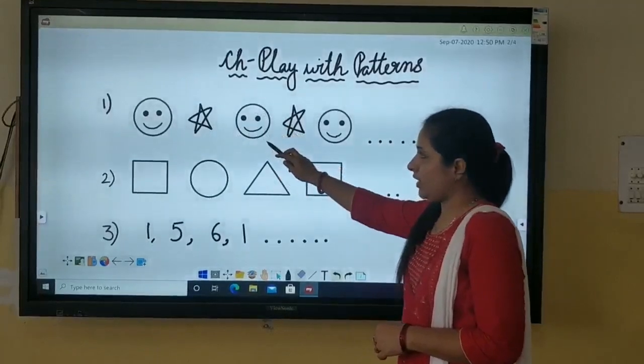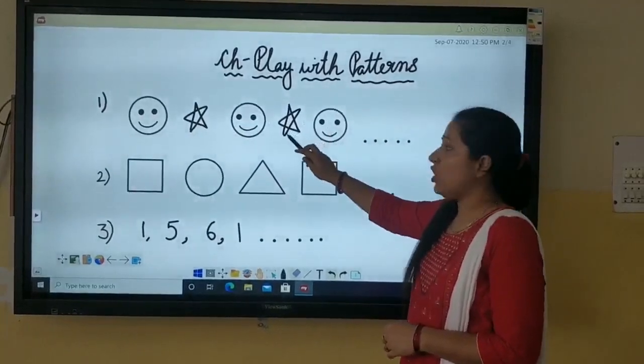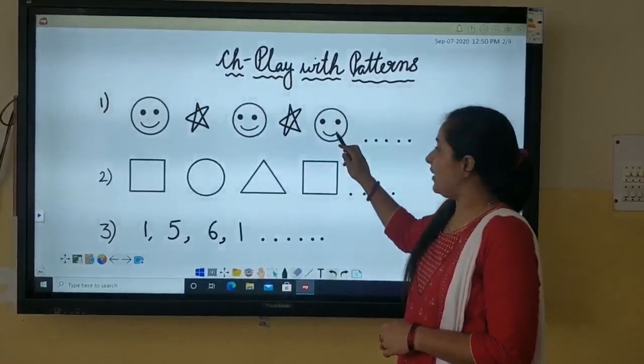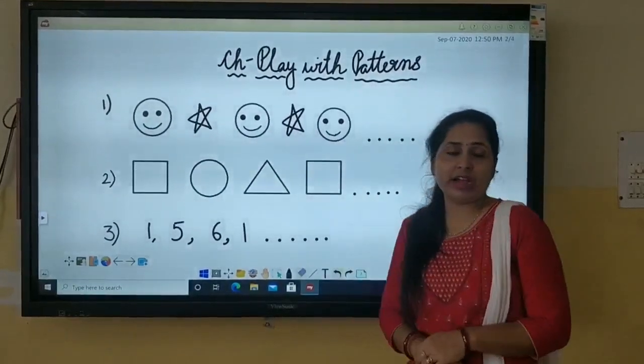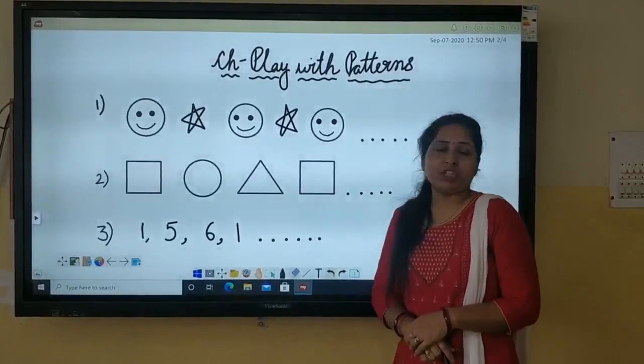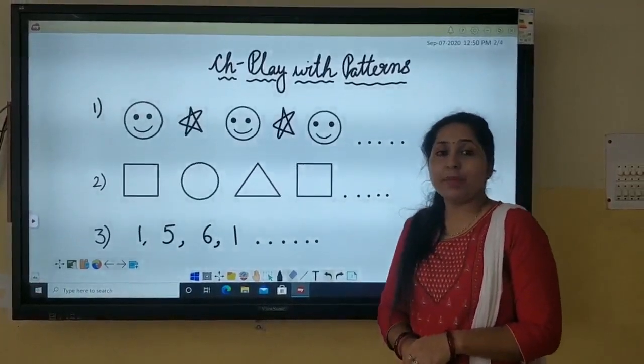Then a star. Again a smiling face. Then again a star. So next we can guess it would be a smiling face. So these shapes, these pictures. These are being drawn in a particular pattern. They are repeating themselves. So it is a repeated pattern.